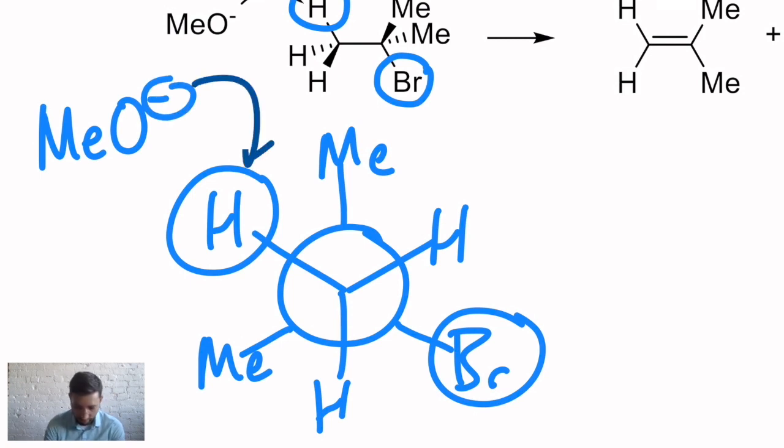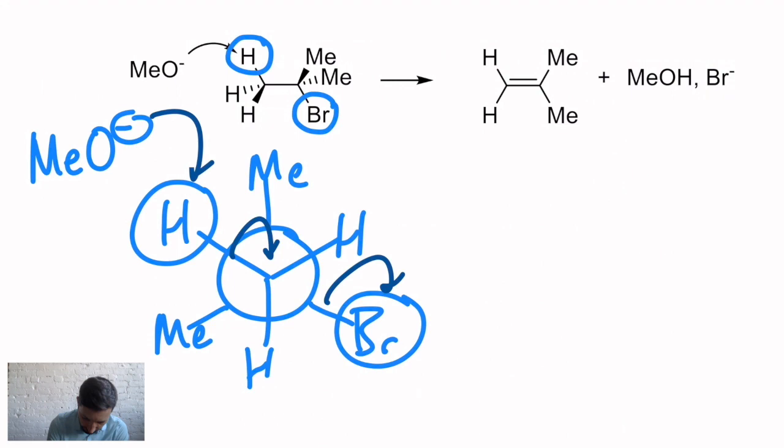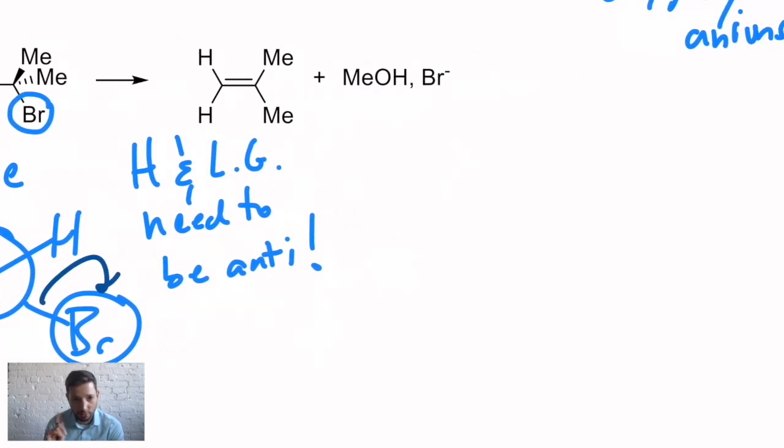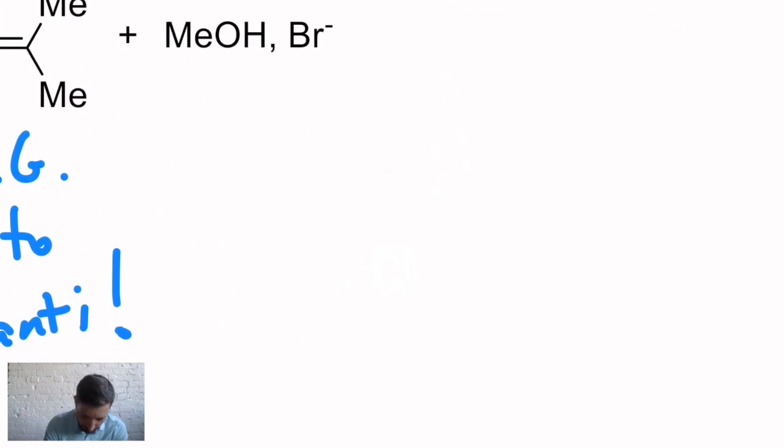That CH bond will break. It's hard to show that in a Newman projection, and then you have the carbon-bromine bond break. So just make a note. H and leaving group need to be anti. You can look at this example and go, why do I care? This doesn't really have a restriction in this example. Well, watch out for examples in rings. So common in rings.